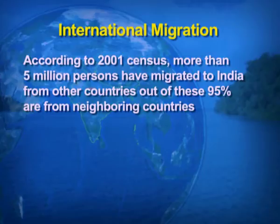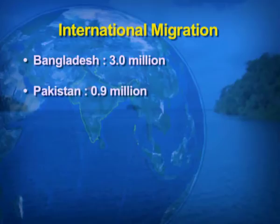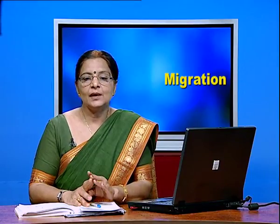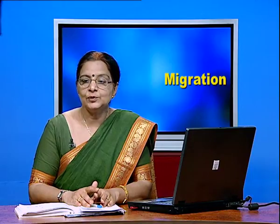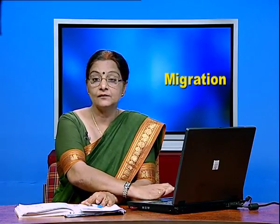Now the second type of migration is international migration. According to the 2001 census, more than 5 million people migrated to India from other countries, and out of that 5 million, 95 percent migrated from neighboring countries. Those neighboring countries include Bangladesh, from where around 3 million people migrated, and Pakistan, from where 0.9 million migrated. Refugees also came from Tibet, Sri Lanka, Bangladesh, and Afghanistan, accounting for 0.16 million migrants.